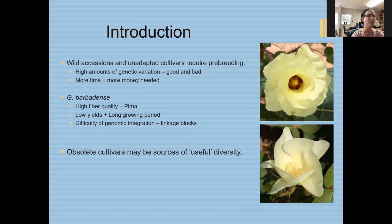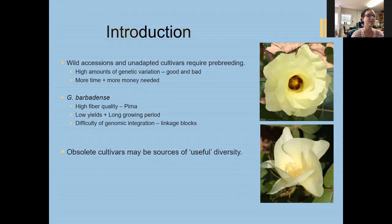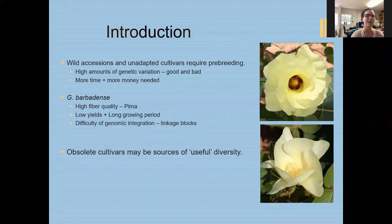There is a species not quite a wild accession: G. barbadense, known as Pima cotton. It has high fiber quality — fibers tend to be very long, strong, and fine, producing very high quality fabrics. Unfortunately, as with wild accessions, they tend to have very low yields and require long growing periods, making them difficult to use in Texas. They also require a lot of pre-breeding to move them into our G. hirsutum populations because they have difficulty integrating genetically, tending to have large linkage blocks that cause progeny to segregate back out.